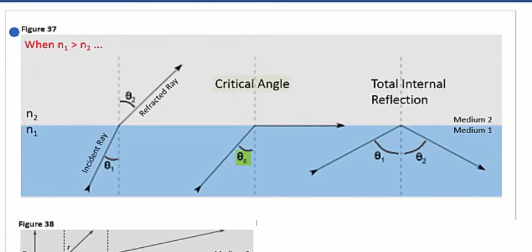Now, if we increase the incident angle past the point of the critical angle here, then we're going to have what is known as total internal reflection.